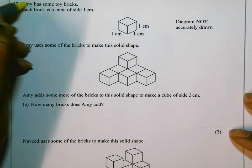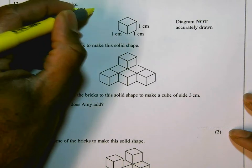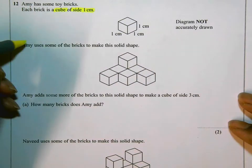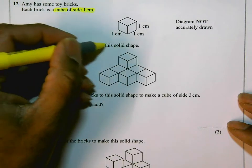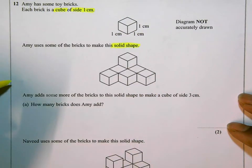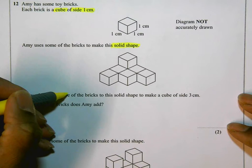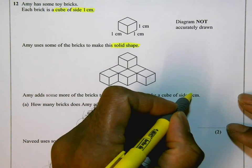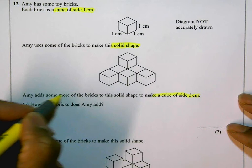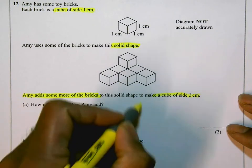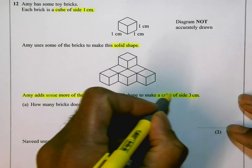Amy has some toy bricks. Each brick is a cube of side one centimeter. So they're all cubes and they're one centimeter inside each. Amy uses some of the bricks to make a solid shape. So it's a solid shape. There aren't any hollow bits, any bits missing. That's really important. Amy adds some more of the bricks to this solid shape to make a cube of side three centimeters.